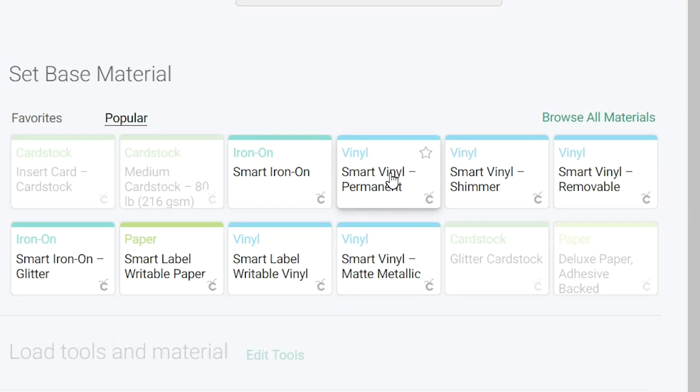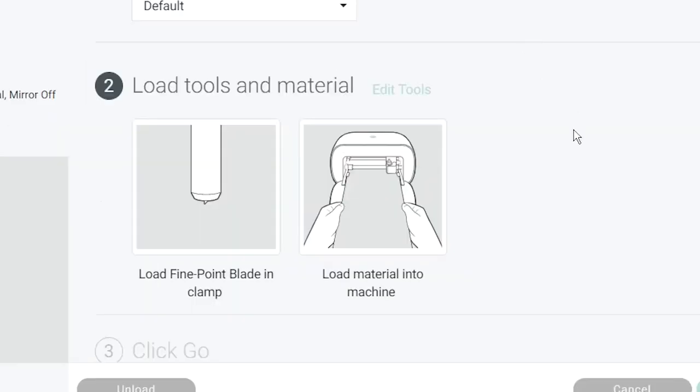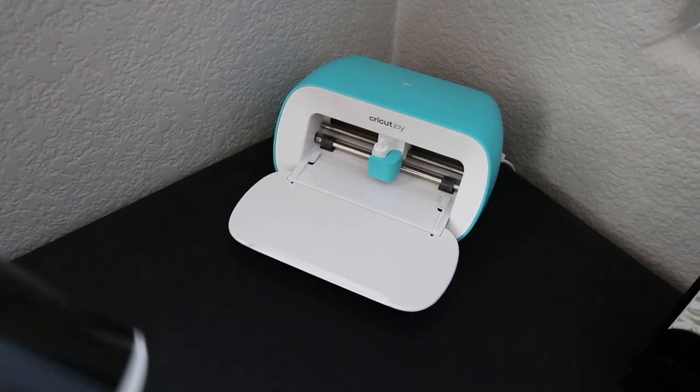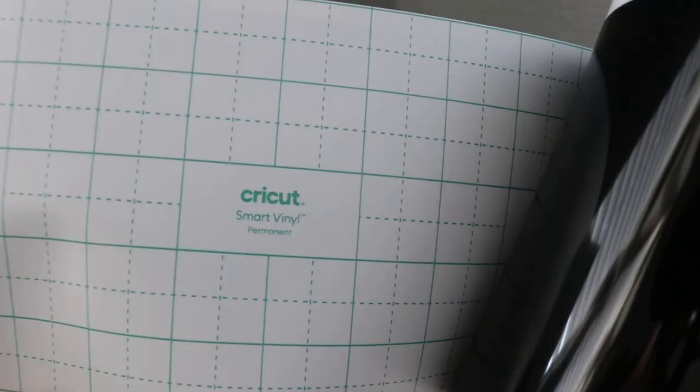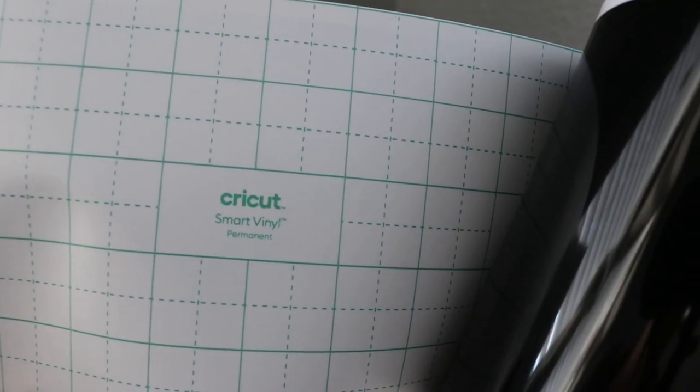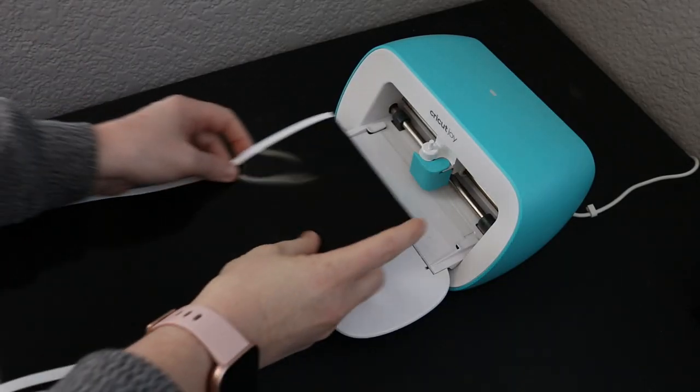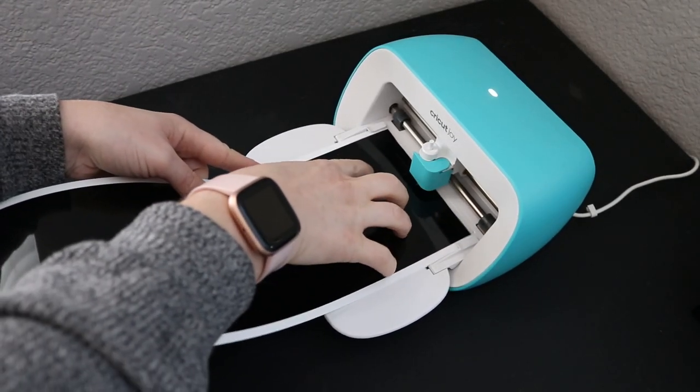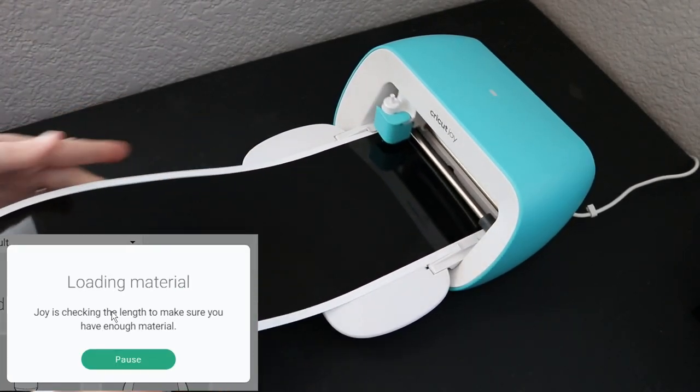I'm going to be using the smart vinyl which is really cool. It's one of my favorite features of the Cricut Joy. They have these smart tools that you don't need to use a mat to cut on. It just cuts on the vinyl, the material itself. So it's going to ask you to load that material into the Cricut Joy.